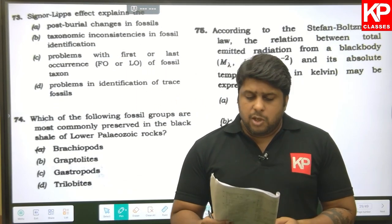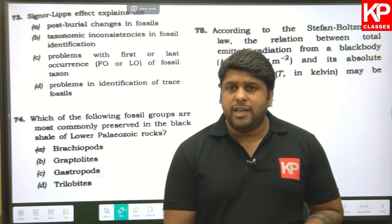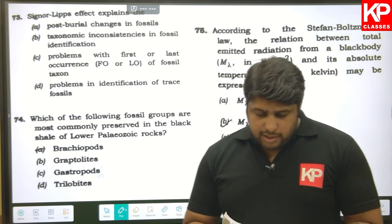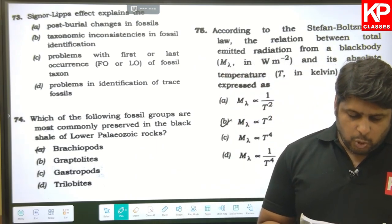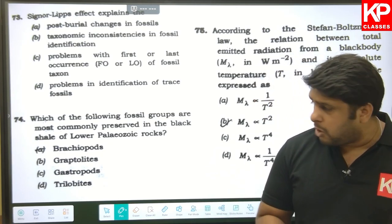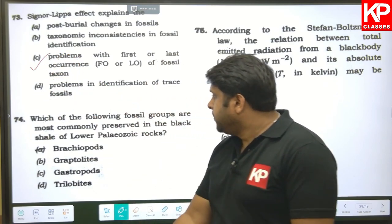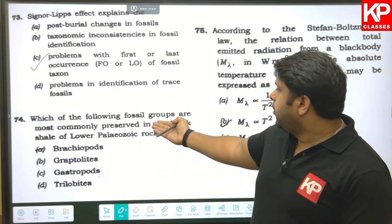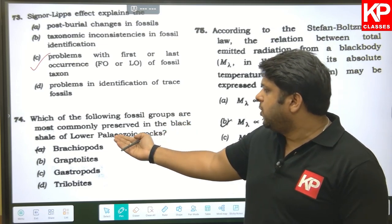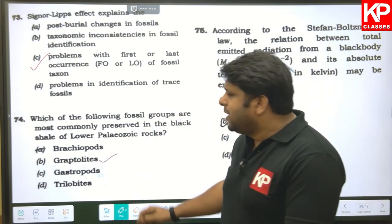Question seventy-three: signal overlaps can help identify issues between first and last occurrences — they explain problems with first or last occurrence data. Option C regarding inconsistency in first or last occurrence is the right answer. Question seventy-four: which fossil group is most commonly preserved in the black shales of the lower Paleozoic? The answer is graptolites.